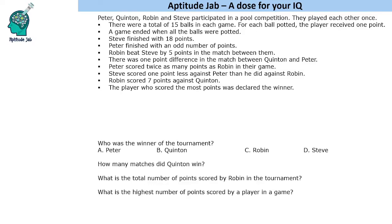Welcome to Aptitude Lab. This set is based on games and tournaments. There are four people: Peter, Quinton, Robin, and Steve. They participated in a pool competition and played each other once. There were 15 balls in each game, and for each ball potted the player received one point. So the game total is 15, and a game goes on till all the balls are potted.